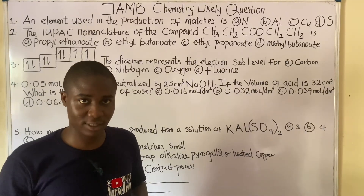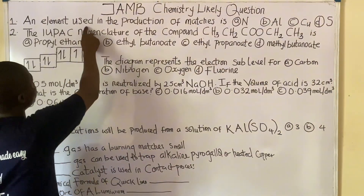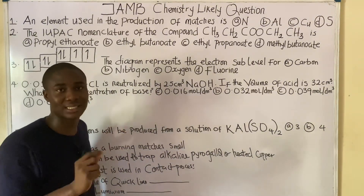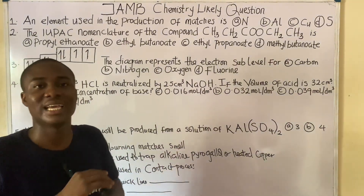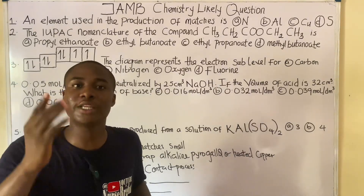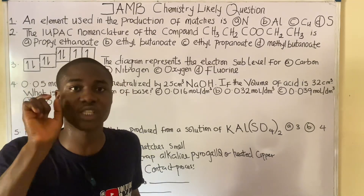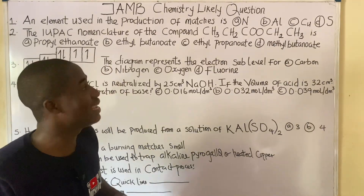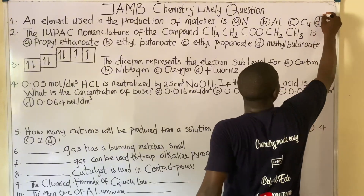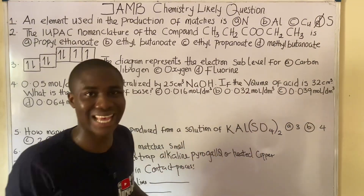Let's get into the first practice question, which says: an element used in the production of matches. It must be noted that the element used as an ingredient in burning matches is simply called sulfur. So the answer to this question is option D — sulfur, symbolized as S.